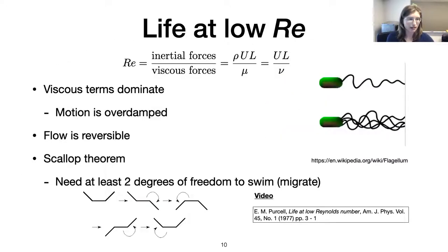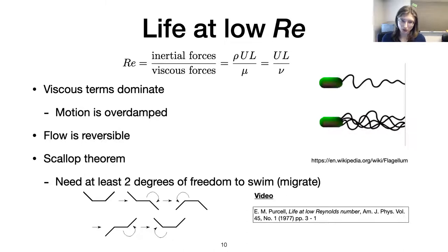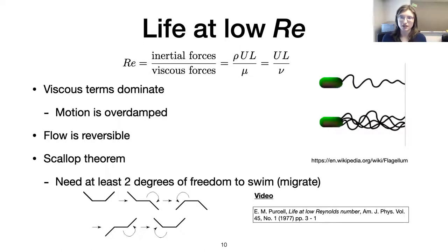Before getting into the model, I want to talk about the Reynolds number — the ratio of inertia to viscous forces, where mu is fluid viscosity, rho is density, U is characteristic velocity, and L is characteristic length scale. It's a dimensionless parameter. Because of the small length scales involved in cells, the Reynolds number is generally very, very small, so we set it equal to zero — we're in a very overdamped viscous regime where flow is actually reversible. To swim in this regime we have the scallop theorem to deal with: we need at least two degrees of freedom.